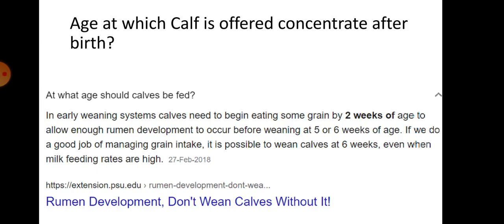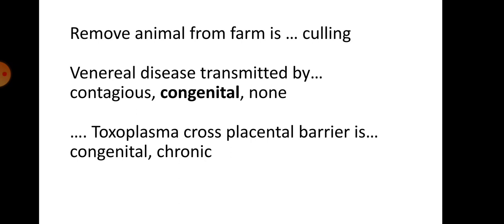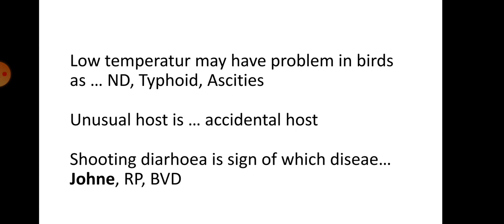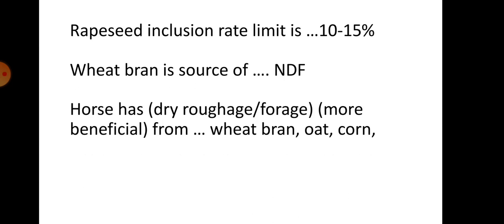The age at which a calf is offered concentrate is after two weeks of age, when it starts eating grains. Scouring (shooting diarrhea) is a sign of Johne's disease. Rapeseed inclusion rate in feed is 10 to 15 percent. Wheat bran is a source of neutral detergent fiber.